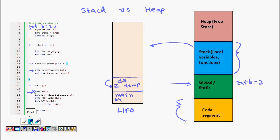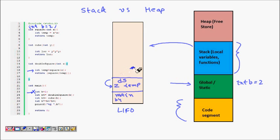Back in double_square, we call square(temp) again — so square is pushed onto the stack again with x, calculates and returns temp. Then double_square itself returns back to main. We have b4 = double_square result, and the double_square frame is popped off the stack. We come back to main.